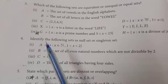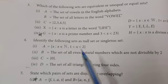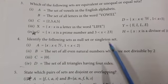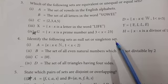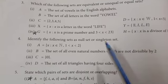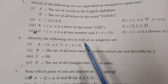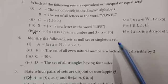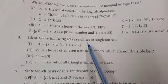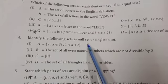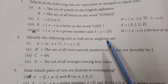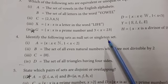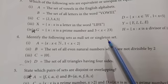Students, now fourth question. Identify the following sets as null set or singleton set. You know what is the meaning of null set and singleton set. The set with no element is called null set. The set with only one element is called singleton set.